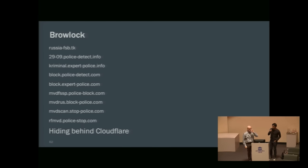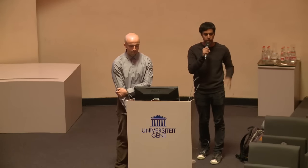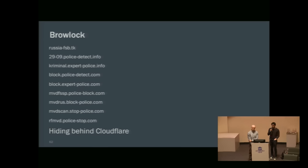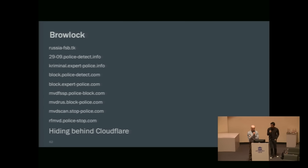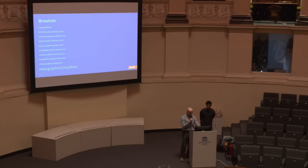We also ran across quite a few BraLock domains. BraLock is when you visit a website and something pops up, blocks your browser, and says you need to pay up or the police will be contacted — kind of like a baby crypto locker. We noticed a slew of BraLock domains all spiking at the same time. Unfortunately, they were all hiding behind Cloudflare, so we couldn't identify their actual IP addresses. These specific ones were all Russian police-force themed — MVD and FSB alert pages.